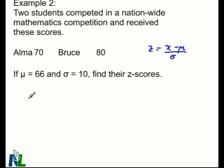For Alma, her z-score would be calculated by taking her score of 70, subtracting the mean, and dividing by the standard deviation. That gives us (70-66)/10, which equals 4/10, giving a z-score of 0.4.